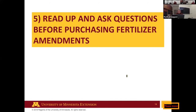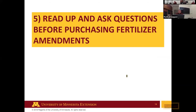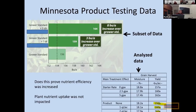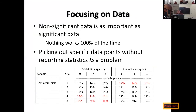The fifth point covers specialty fertilizer amendments. There are a lot of products in trade magazines that growers have to sort through. When assessing products, it's important to look at data rather than marketing claims. As an example of product testing data: a company website showed an 8–13 bushel increase over grower standard, but looking at a number of trial locations, the product worked at one out of five sites. Statistics can't rule it out, but four out of five times it didn't work.